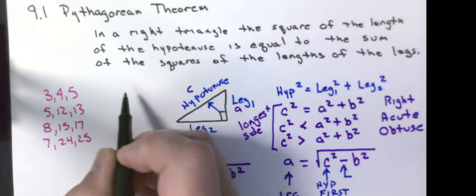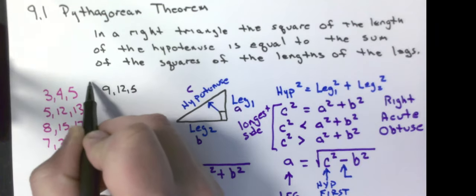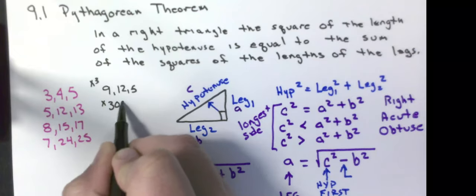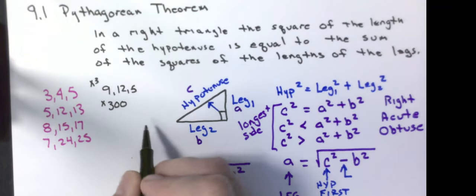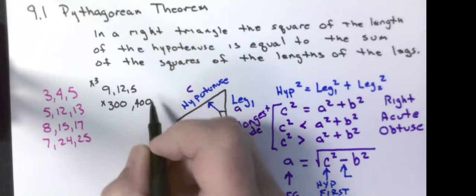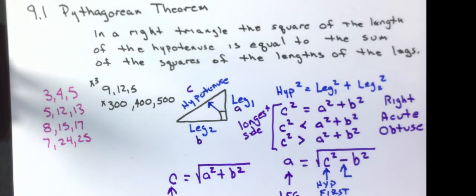They'll use 3, 4, 5. They could even say that that's 9, 12, 15, just by multiplying by three. I could say, hey, if he goes 300 miles west, and then he goes 400 miles north, how far away is he from his starting point? Well, he would be 500 miles. So any multiples of those will also work.